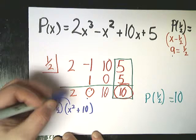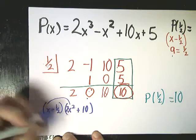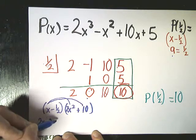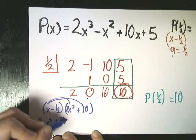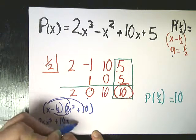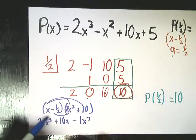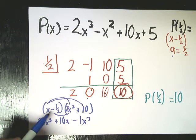X to the, oh, sorry, two x squared. I don't know what I was thinking. So it's two x to the third plus ten x minus one x squared, because I'm doing two times negative one half here,